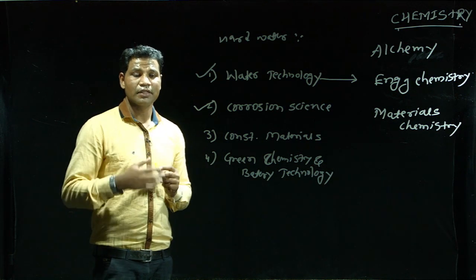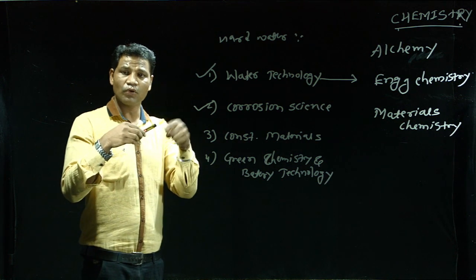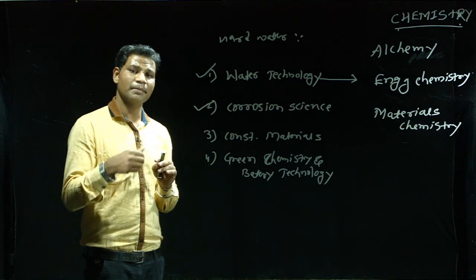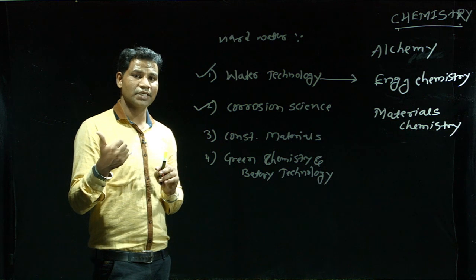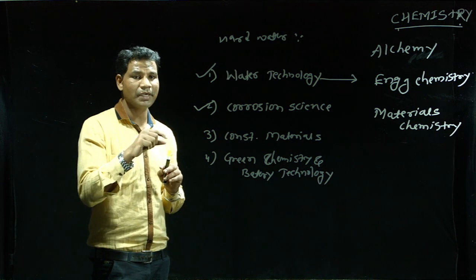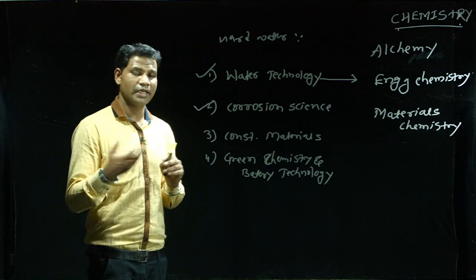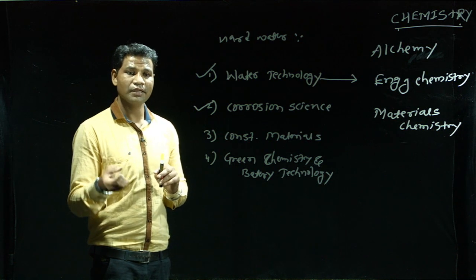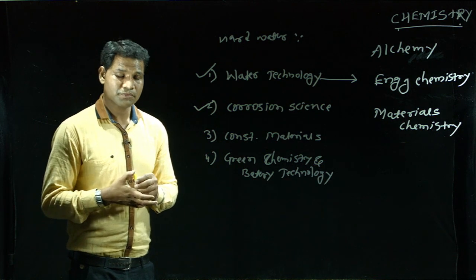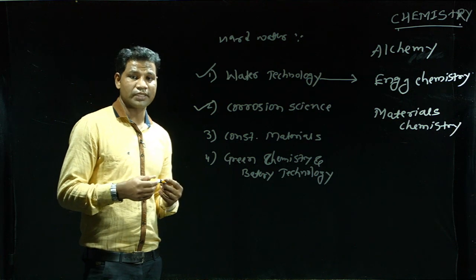Protective coatings: any coatings applied on a metallic surface are called protective coatings. Methods include galvanization — the process of coating a thin layer of zinc metal on another metallic part to be protected. Tinning is the coating of tin on metal. Likewise, electroplating. This covers corrosion science.